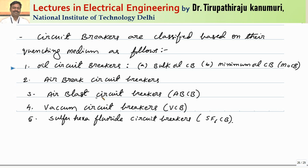The next type is the air blast circuit breaker, where air is blasted or forced through the gap so that all the carriers as well as the heat will be removed. That is called the air blast circuit breaker. Another type is the vacuum circuit breaker — by creating a vacuum, there is no chance for carriers to be produced in between, and if heat can be dissipated at a faster rate, the arc can be extinguished. The contacts are opened in the vacuum.